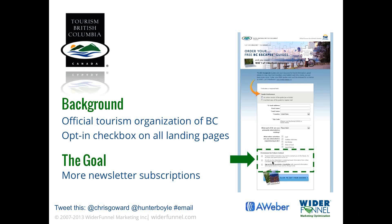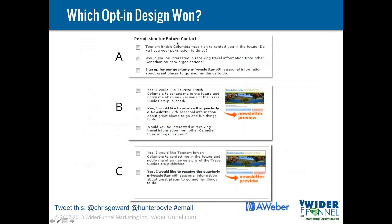We focused on the permission-for-future-contact area, which had three checkboxes. We ran through the process of developing hypotheses to test and find out what really works. Variation A said: 'Tourism in British Columbia may wish to contact you in the future. Do we have permission to do so?' with checkboxes for receiving travel info from other Canadian tourism organizations, and signing up for a quarterly e-newsletter. Variation B was rewritten: 'Hi, I would like Tourism BC to contact me and notify me when new versions of the travel guides are published,' with a link to preview a recent newsletter. Then a bolded 'Yes, I would like to receive the quarterly e-newsletter.' Variation C was exactly the same as B but removed the third checkbox for partner organizations.